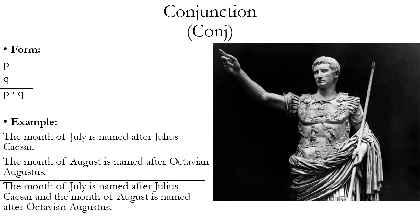Here's an example: The month of July is named after Julius Caesar. The month of August is named after Octavian Augustus. Therefore, the month of July is named after Julius Caesar and the month of August is named after Octavian Augustus. The order of the conjuncts can vary — it doesn't matter for the purpose of this rule whether P occurs first on an earlier line of the proof or if Q occurs first.